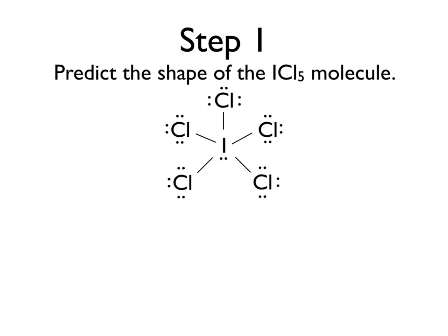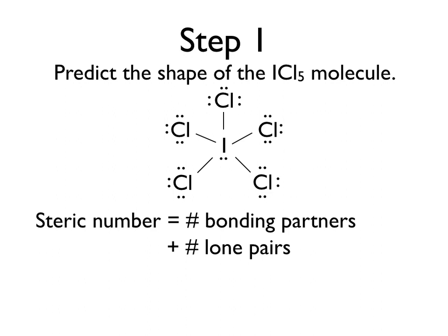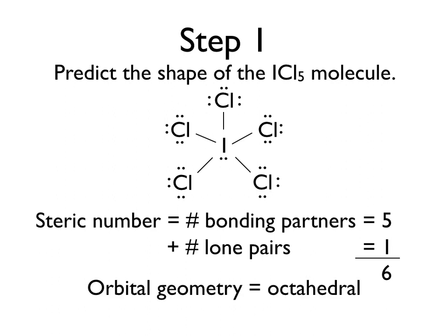Now that we have our Lewis dot structure, we can consider what the shape of the molecule will be. First, we need to consider the steric number of this molecule, which is defined as the number of bonding partners plus the number of lone pairs of our central atom. The iodine is bound to five different chlorine atoms, giving it five bonding partners, and additionally it has one lone pair attached to it, which gives us a total steric number of six.